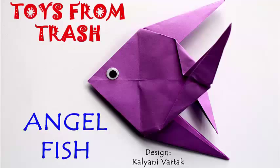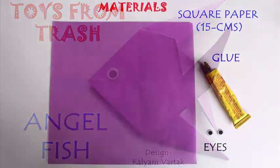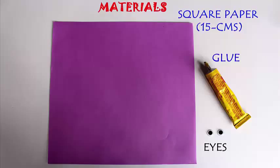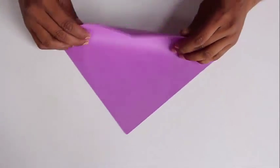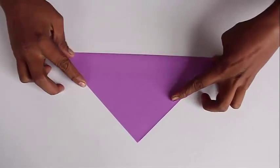Today we are going to fold a very beautiful angel fish from a square piece of paper. Take a square which is 15 centimeters on the edge and first you have to fold a bird base.